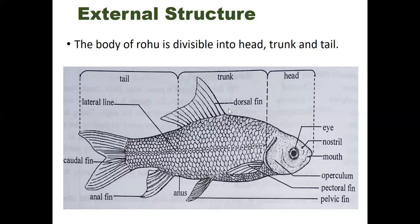The dorsal fin is rhomboid in shape, located on the back at the middle of the trunk. It is supported by 15 to 16 bony fin rays. It protects the fish against rolling and assists in sudden turns and stops. The pectoral fins are paired fins, one on each side, located just beneath the operculum, supported by 16 to 17 bony rays. The pectoral fins create a dynamic lifting force that assists in maintaining depth.